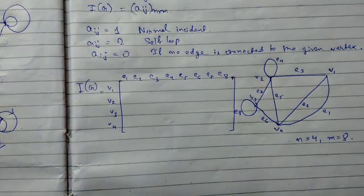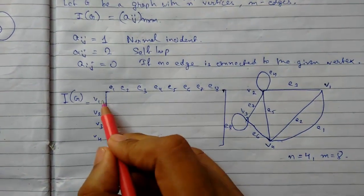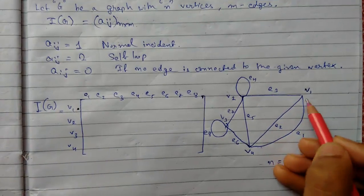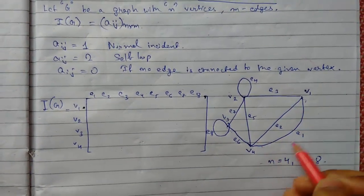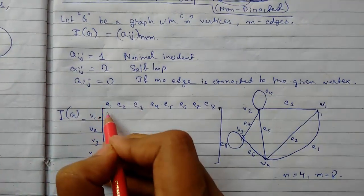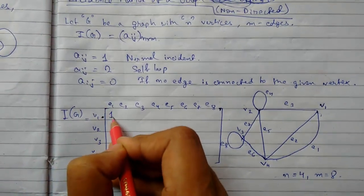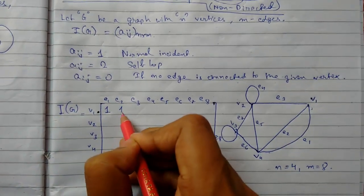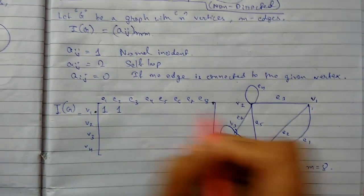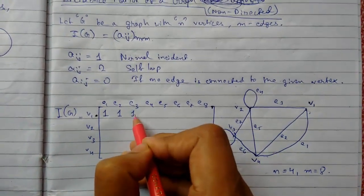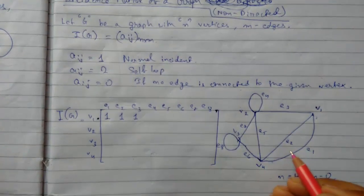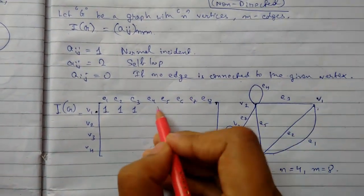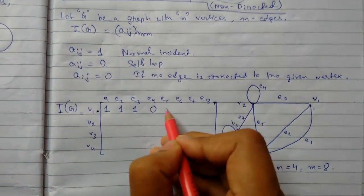Now we start plotting the matrix. For V1 to E1, there is an edge connected, so it is 1. For E2 and E3, V1 is also connected, so those are 1. For E4, there is no path connected to V1, so it is 0.